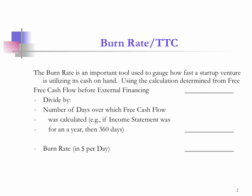Burn rate is simply taking your free cash flow during a length of time — whether it be a quarter, a month, or a year — and dividing it by the number of days in that period to come up with how much money is either being spent or being generated per day. For instance, if you calculated how much cash was being burned or generated during a year, you divide it by 360 days in a year and have a burn rate per day for that yearly period.